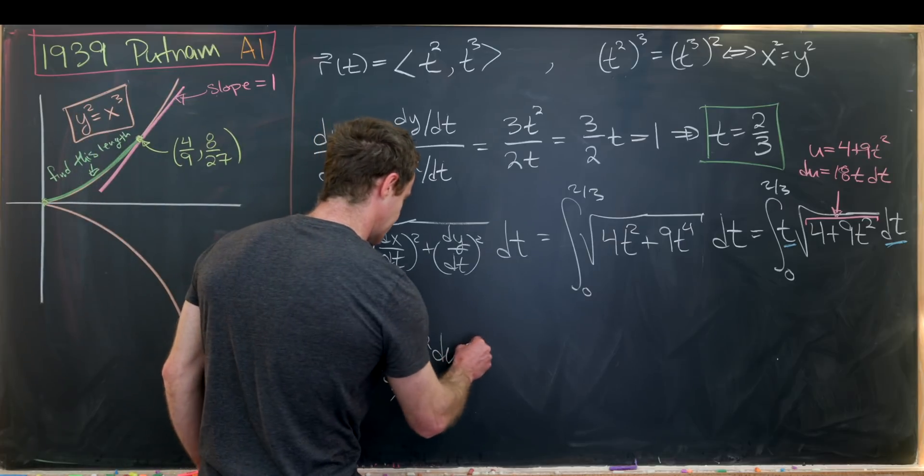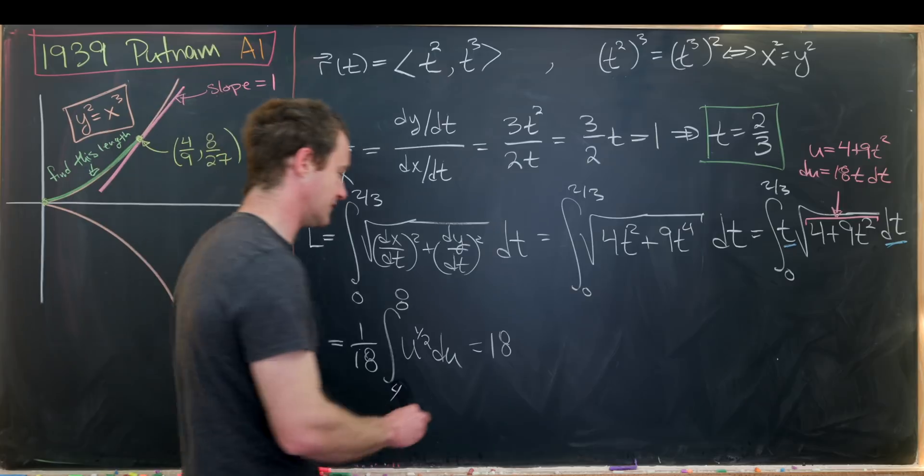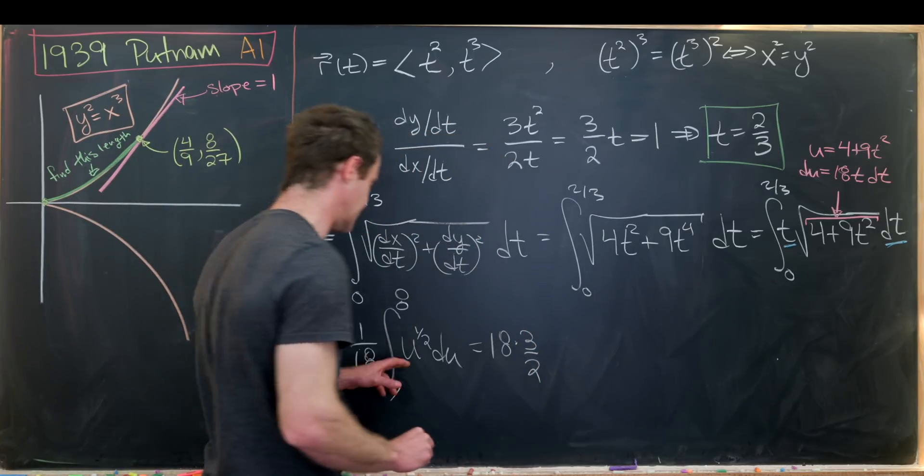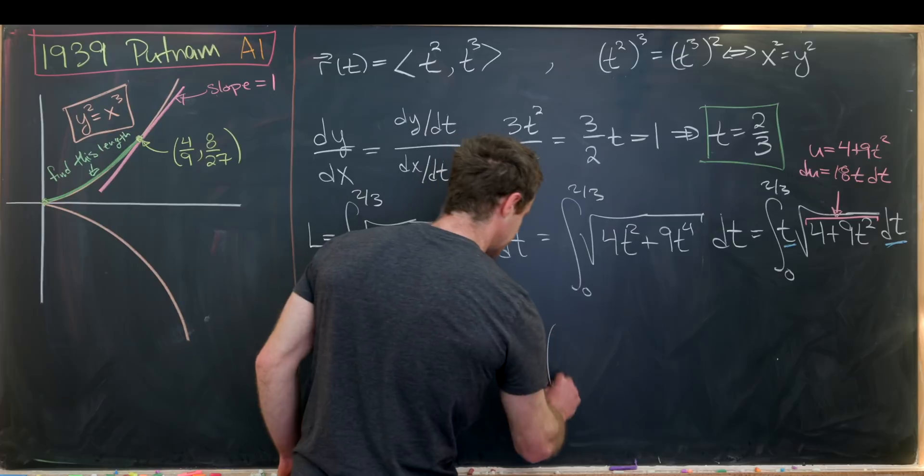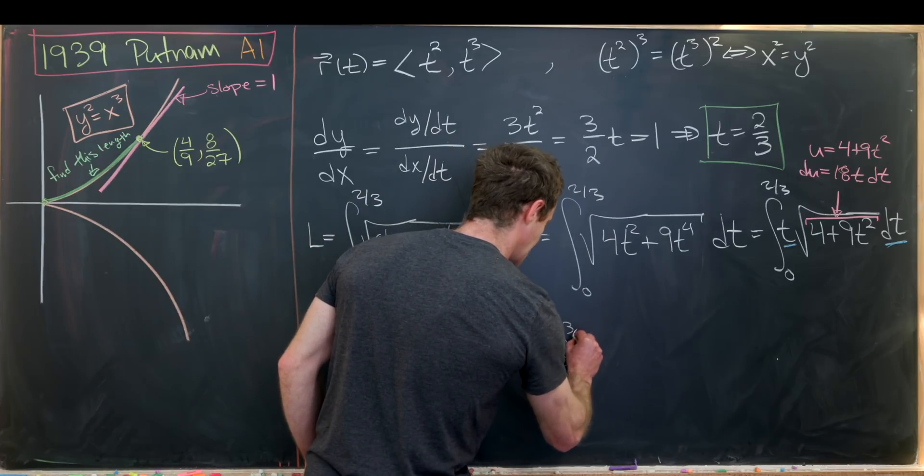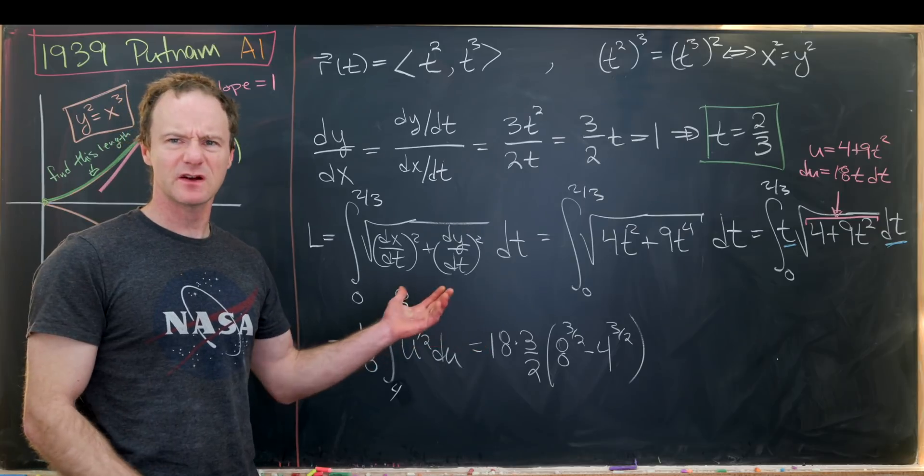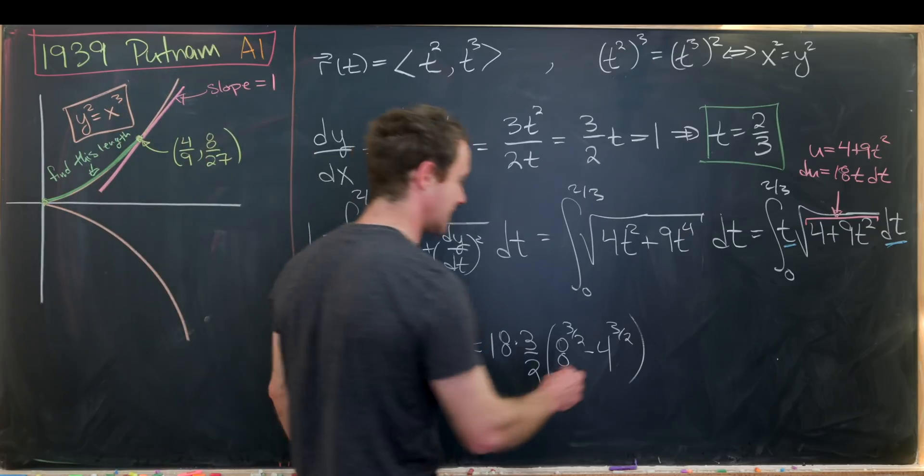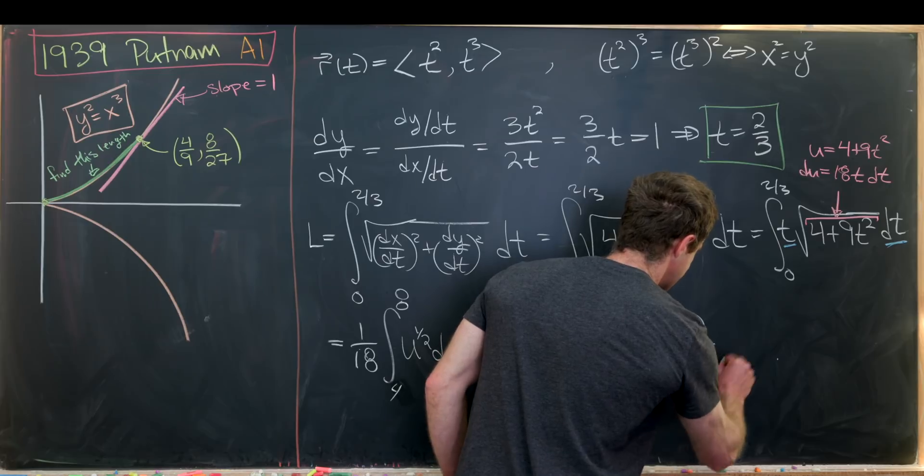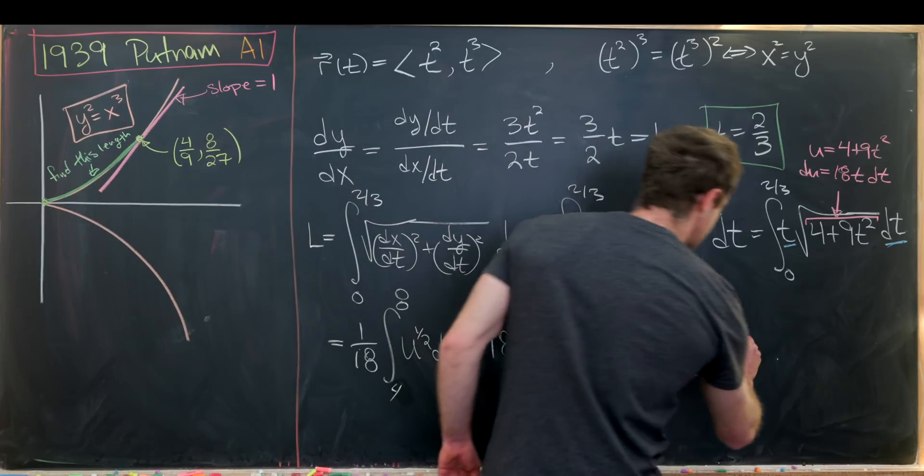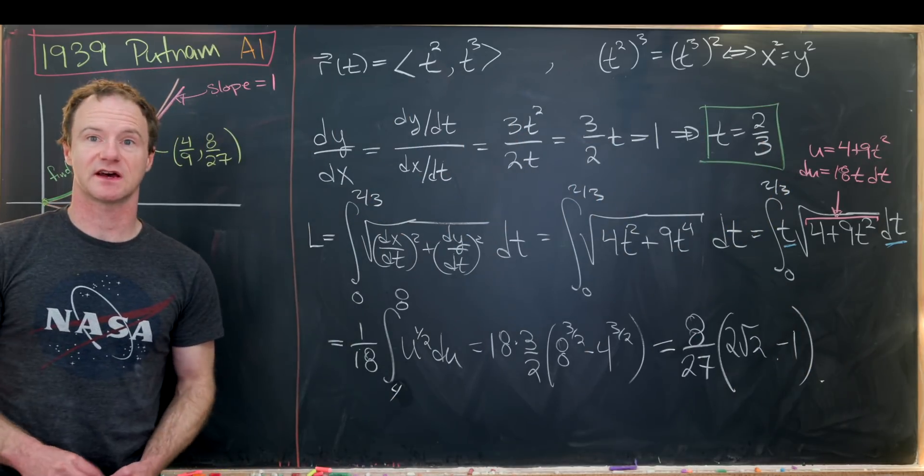Now let's notice that this gives us 1/18, and then taking the antiderivative will give us 3/2, and then u to the 3/2, evaluated at 8 and 4. So we'll have 8 to the 3/2 minus 4 to the 3/2. And from here, it's fairly standard arithmetic to end at the following expression: 8/27 times (2√2 - 1). And that's a good place to stop.